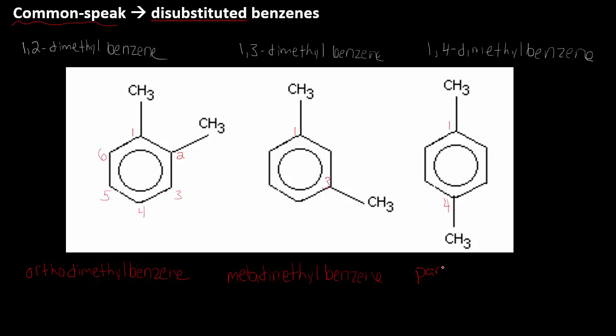And 1,4 is labeled para, so para-dimethylbenzene. And it's used instead of the numbers. Now crucial to this is the substituents need to be the same. So you wouldn't have an ethyl group and a fluoro, for example, or a methyl group and a bromo.